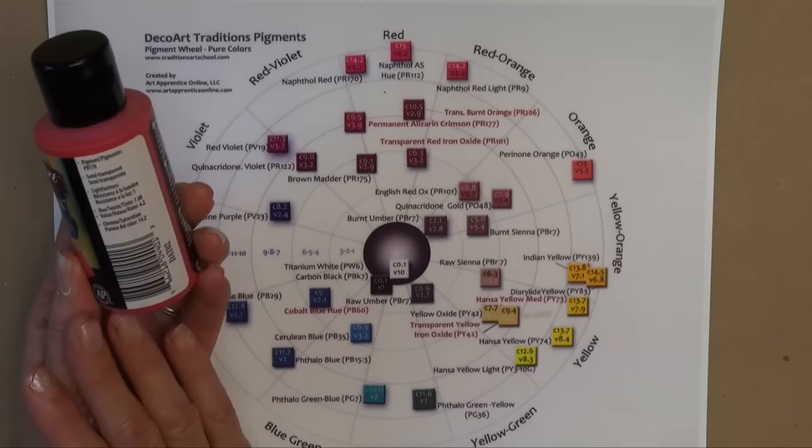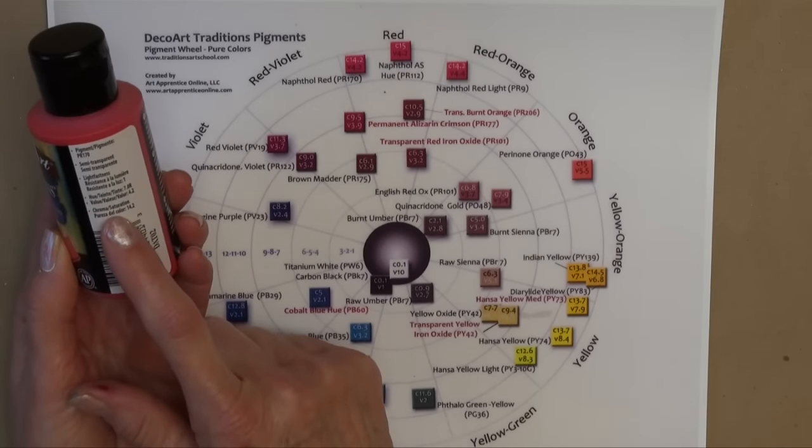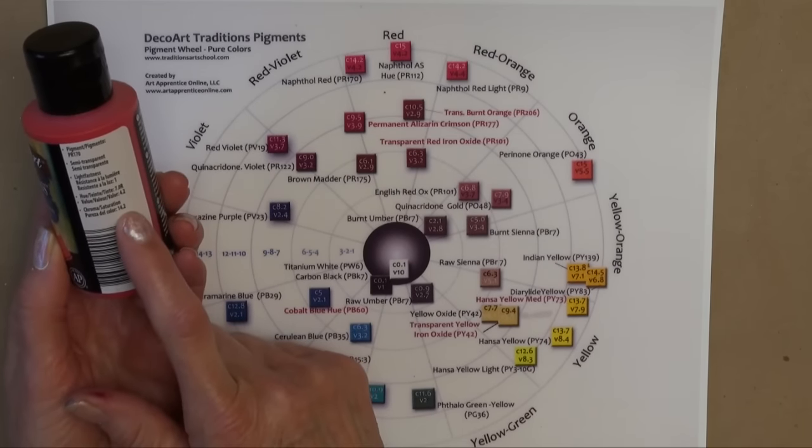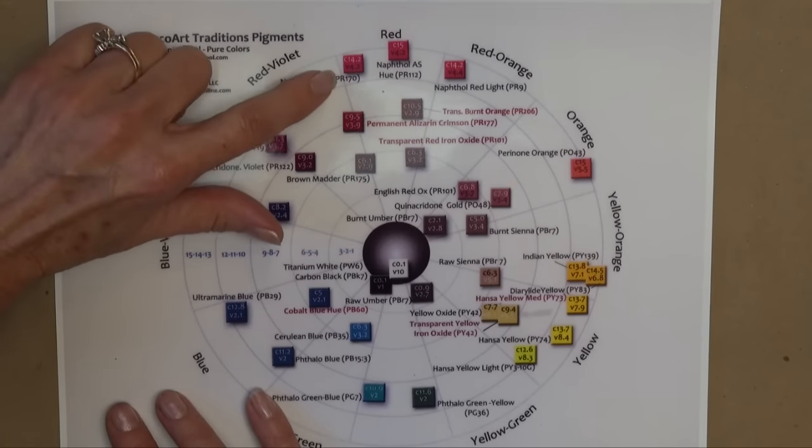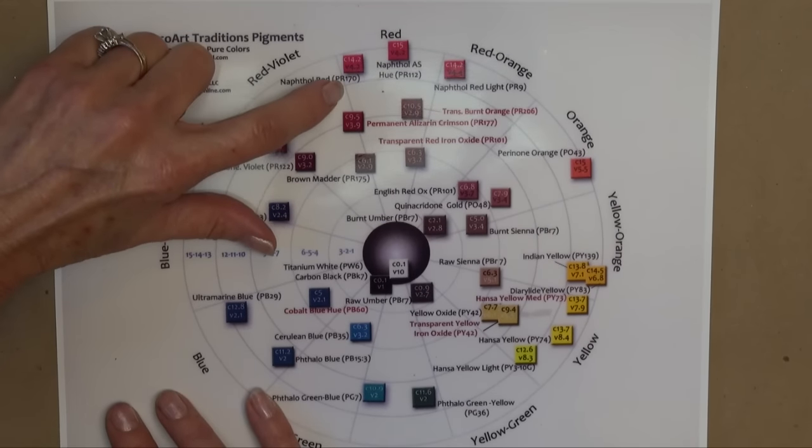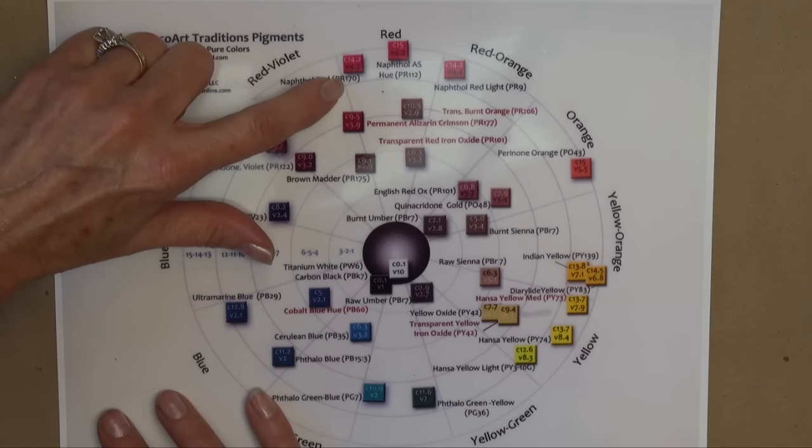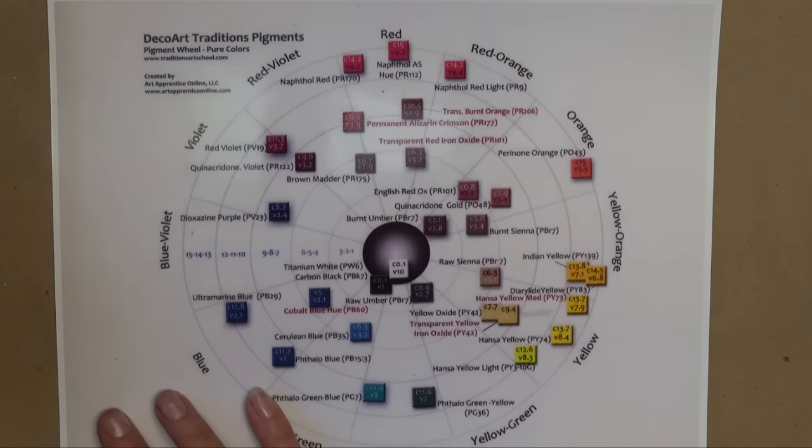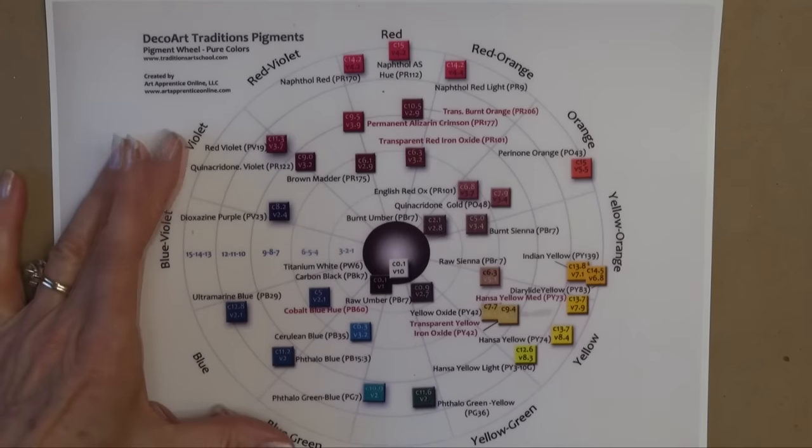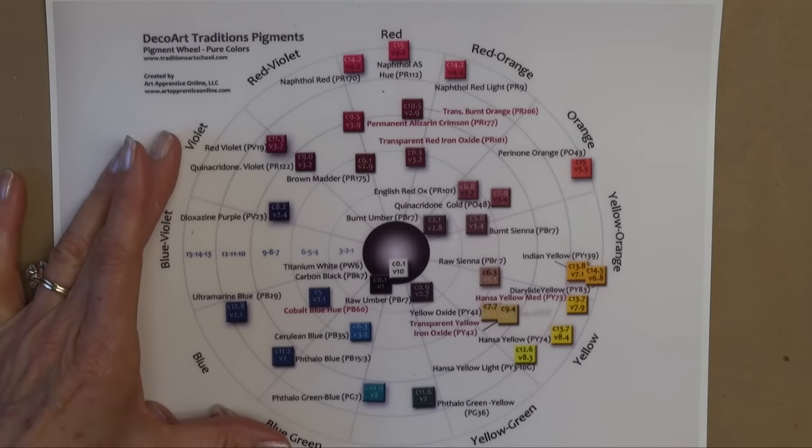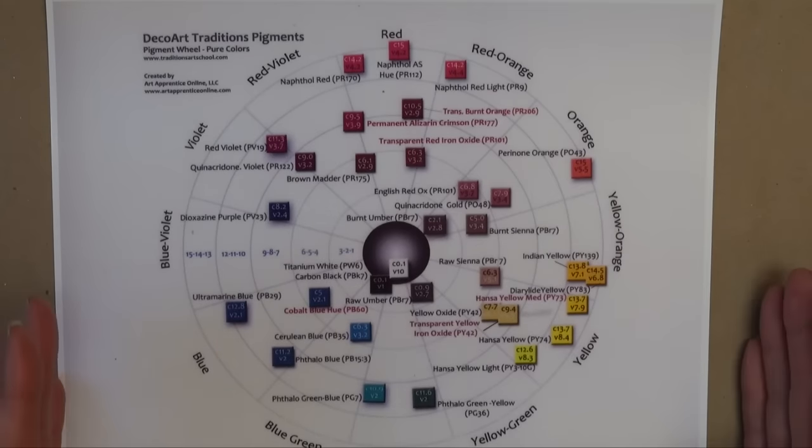Let's look at the bottle of Naphthol Red. It tells us on here that it's a chroma saturation of 14.2. Now here we are right here. That color sits just off of the outer ring at a 14.2. This also tells us what value it is. It's a 4.2, which confers with what it says on the label. So this is another quick guide that you can use to find how intense that color is, what value it is. It's all here on one chart.